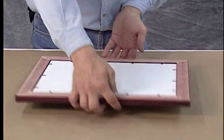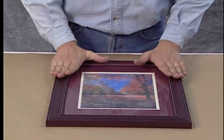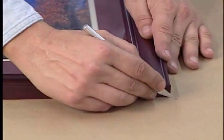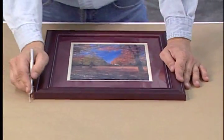Next, flip the frame over and set it on top of the backing paper. Use a sharp knife to roughly remove the excess paper. Be careful not to cut into the frame.